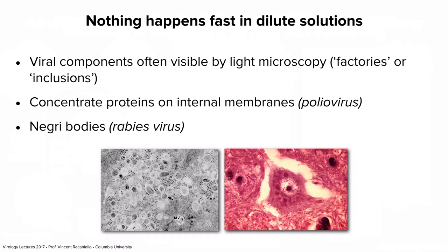Another principle: nothing happens fast in solution. That's why many viruses concentrate their components in various ways to accelerate reactions. One way is that some viruses replicate their genomes on membranous vesicles induced in the cell — we discussed this during viral RNA synthesis. On the lower left panel is a poliovirus-infected cell showing typical double-membrane vesicles that proliferate after virus infection in response to a viral protein. RNA synthesis occurs on those surfaces because it's concentrated there, and virus assembly also occurs on the surface of those vesicles.